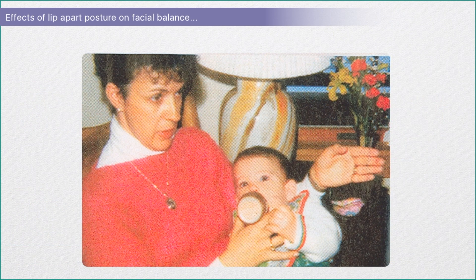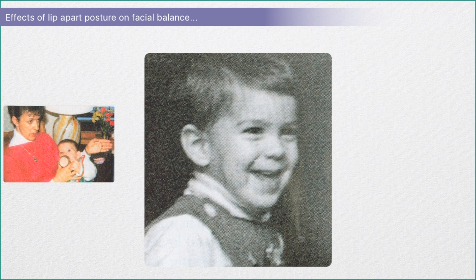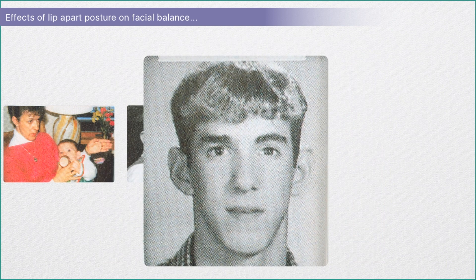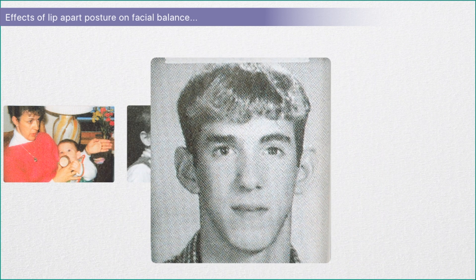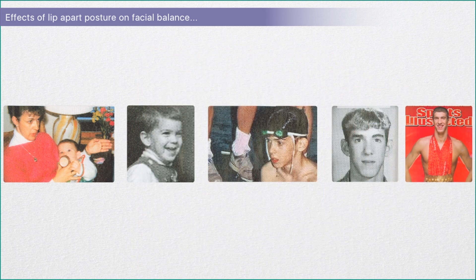Here we see somebody everybody is familiar with — this is actually Michael Phelps. Here he is with his mother being bottle fed, which is the exact wrong thing to do. Here he is when he's a little bit older, and here he is as a young child on the edge of a swimming pool with his mouth hanging open. A few years later, his face height has increased significantly, and by the time he wins his first gold medal in the Olympics in Beijing, his face height is very long.